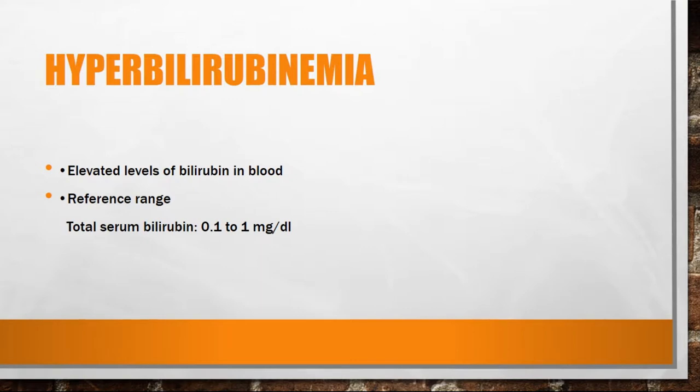Hyperbilirubinemia means elevated levels of bilirubin in blood. The normal level of total serum bilirubin is between 0.1 to 1 mg/dL, and if it increases then we call it hyperbilirubinemia.